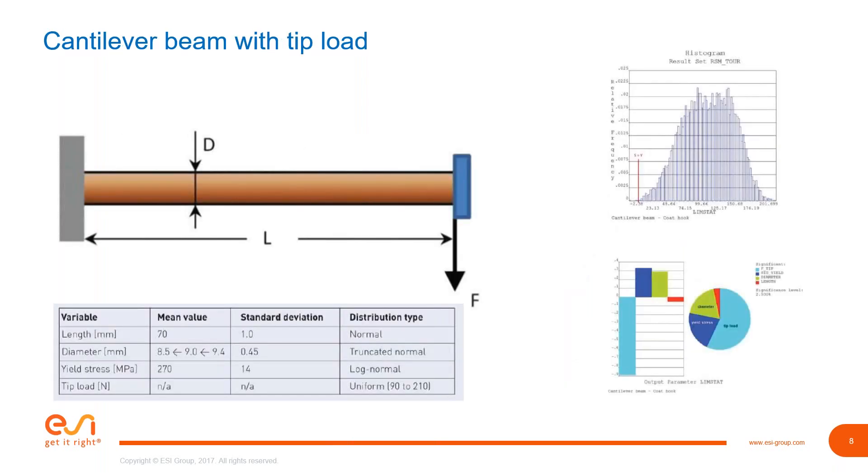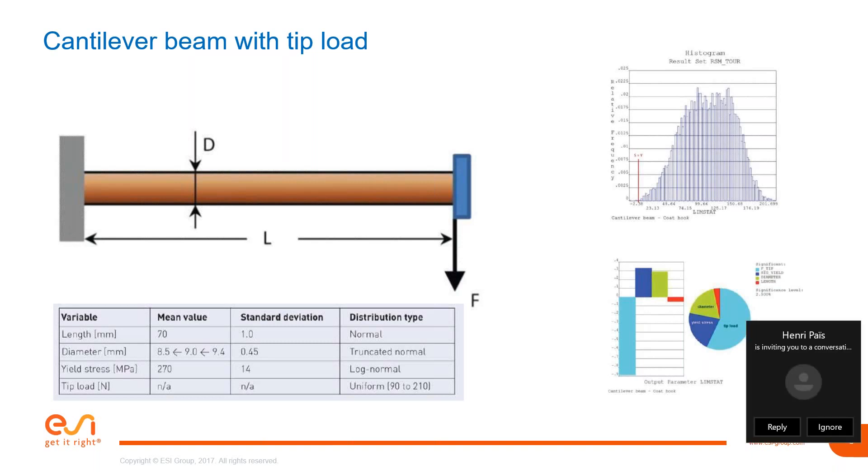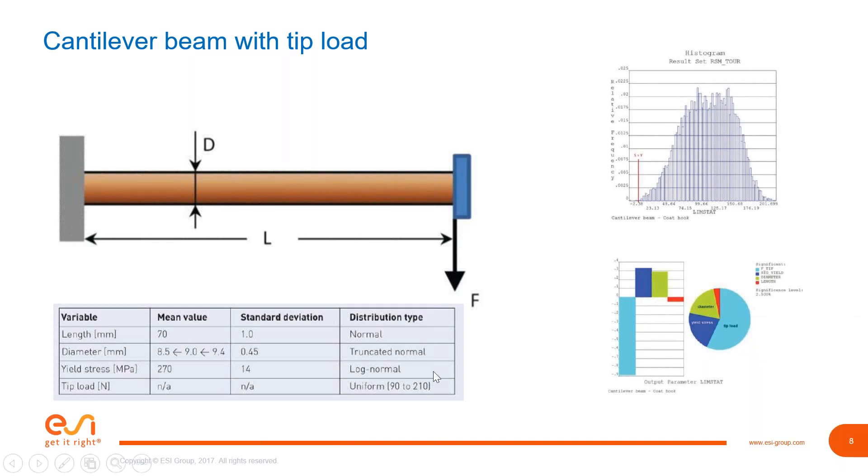There's a very small example here for the mechanical guys among you. Here it's an example of a cantilever beam with a tip load, very simple example. Here we look at all of the variables of our design: the length of the cantilever, the diameter. We take into account that it might be a cylinder in this case, and yield stress and tip load. Those are the variables you want to take into account in your design.